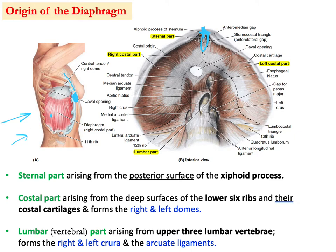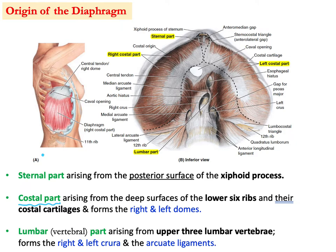The second origin is the costal part. As you can see, these are costal cartilages and especially the lower six ribs on both right and left sides. The costal part means the diaphragm arises from the deep surface of the lower six ribs and their costal cartilage, forming the right dome on one side and the left dome on the other.